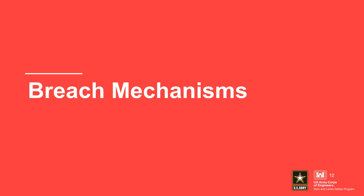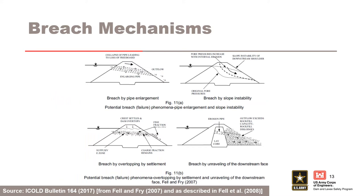Breach Mechanisms. The following slides will describe each of the four breach mechanisms in more detail. Fell and Fry 2007 schematically showed four breach mechanisms associated with internal erosion: gross enlargement of a pipe or concentrated leak, overtopping due to crest settlement or sinkhole development, sloughing or unraveling of the downstream face, and slope instability. For most embankment types and failure modes, the likelihood of breach development will be dominated by one or two of the potential breach mechanisms. Most will eventually lead to overtopping.